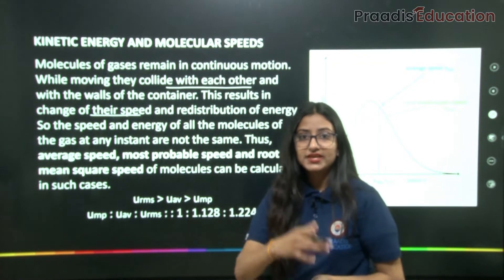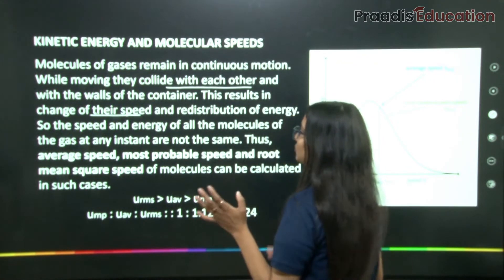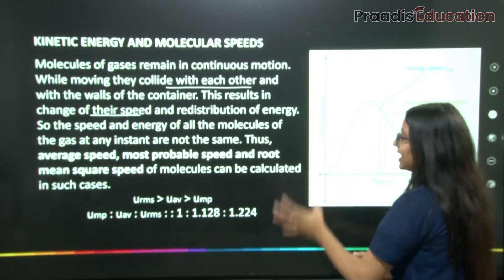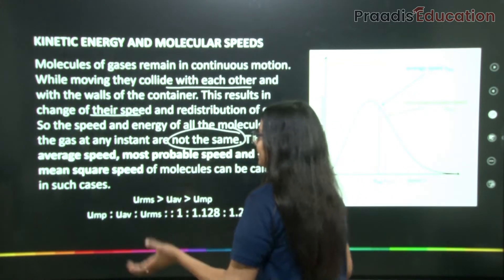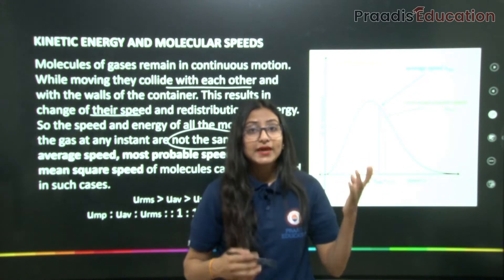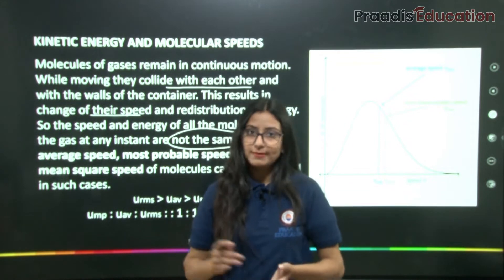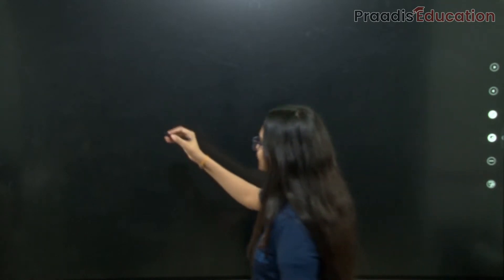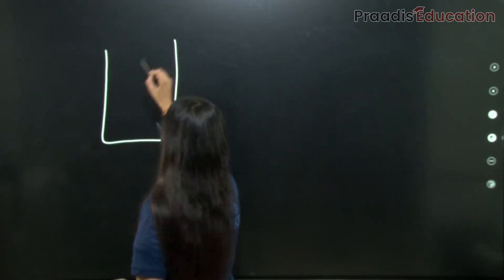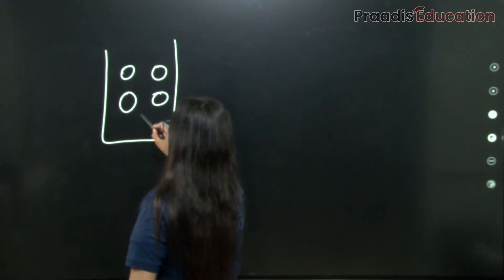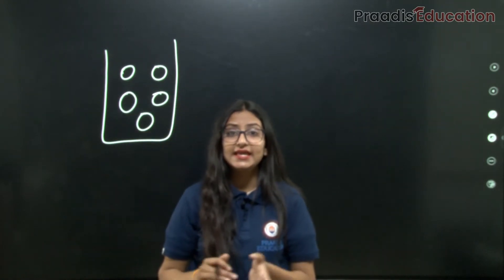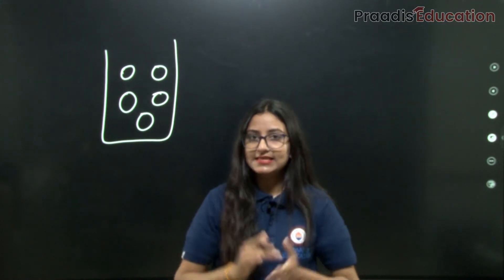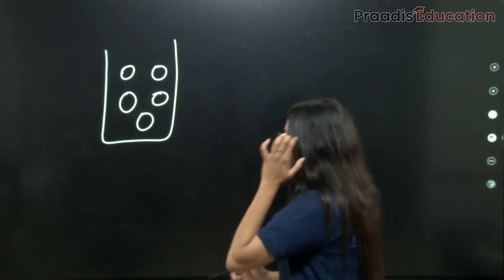Energy transfers from one molecule to another upon collision. So the speed and energy of all gas molecules at any instant are not the same. Let us look at a real-life example to understand how energy is redistributed. This is a very easy, real-life example we have all seen.